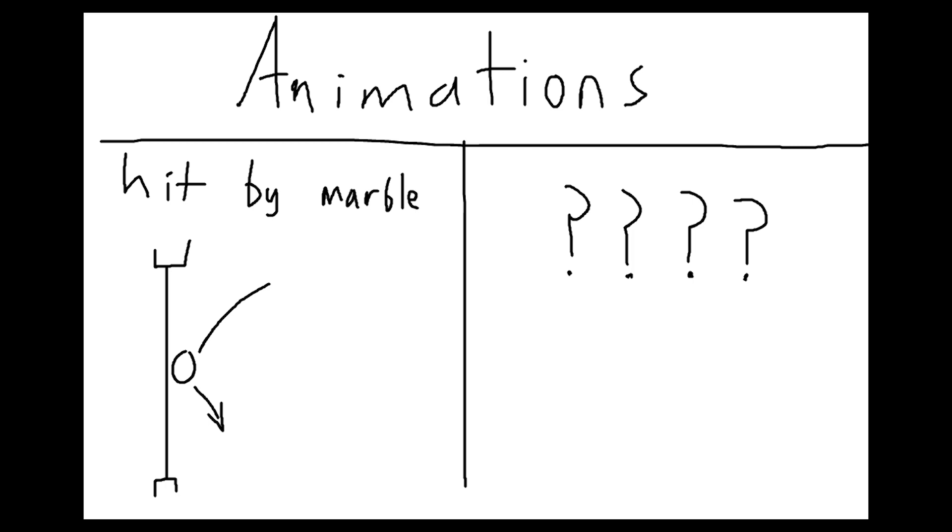So far, I've covered all the animations for an instrument being directly hit by a marble, but what about all the other movement, where there isn't a marble hitting them? The answer is keyframes.